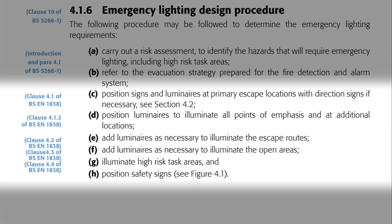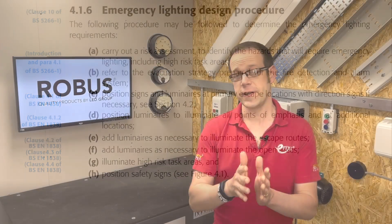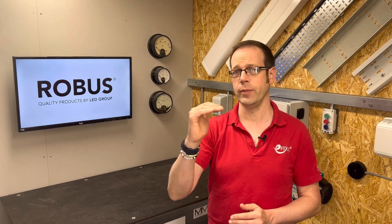C — position signs and luminaires at primary escape locations with direction signs if necessary, see section 4.2. D — position luminaires to illuminate all points of emphasis and at additional locations. E — add luminaires as necessary to illuminate the escape routes. F — add luminaires as necessary to illuminate open areas. G — illuminate high risk task areas, and H — position safety signs. Signs are given heavy prominence, particularly at escape locations, even being listed ahead of luminaires in indent C. Direction signs are critically important — more on that in a moment.